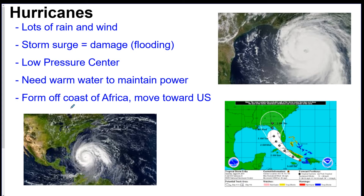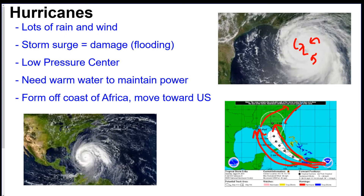Now we're on to severe weather. There are a couple of different storms to know. The first one is a hurricane. There's lots of rain and wind. Storm surge — which is super flooding — is where you're going to get your most damage besides from the wind. It's a giant low pressure center, so these storms go counterclockwise and inward. Their fuel is warm water. They generally form around Africa and the equator, move toward the United States, and once they go on land and are cut off from their water supply, they die out. Generally they move up by Florida and then make a turn toward New York.